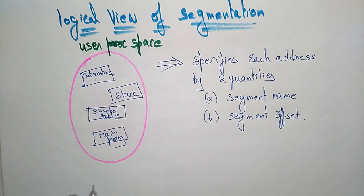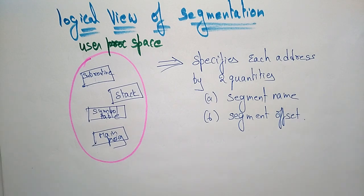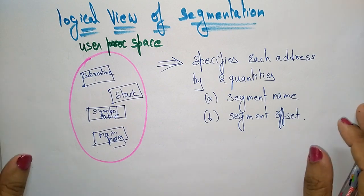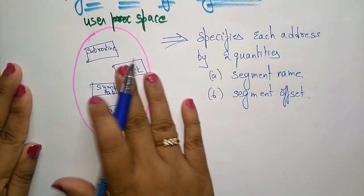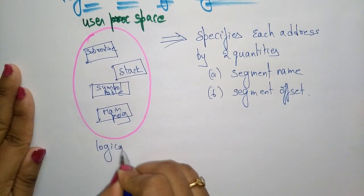If you know the segment name and the offset, then the CPU can get the data at that particular address location and execute the program. So everything is a logical view. Whatever result you want stored in main memory — that is the physical memory, the physical space. So this is a logical address; this is completely stored in logical address.